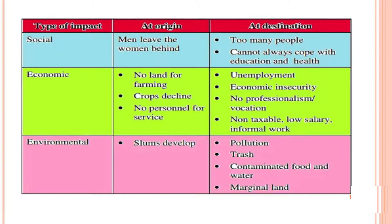The table on screen summarizes the impacts of migration — observe them carefully. Types of impact: Social — men leave women behind; at destination, too many people cannot always cope with education and health demands. Economic — no land for farming at origin, crop decline, no personnel for service; at destination, unemployment, economic insecurity, no professionalism or recreation, non-taxable, low salary, informal work. Environmental — slum development at origin and destination, pollution, trash, contaminated food and water, and marginal land.